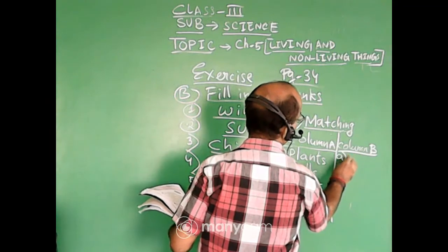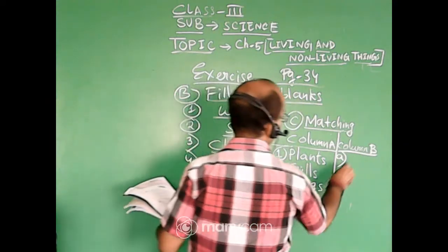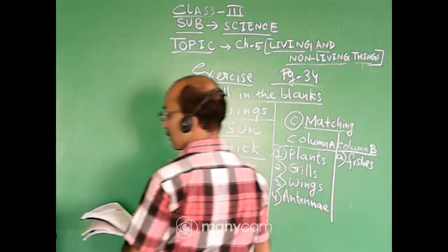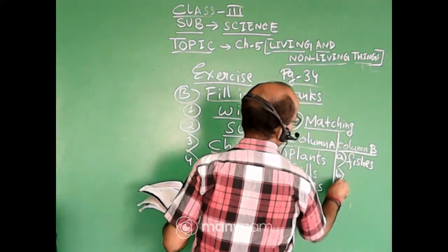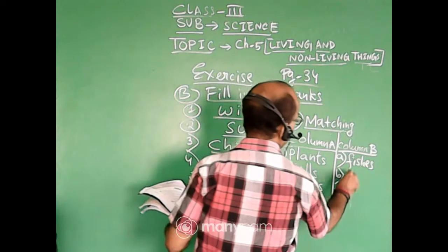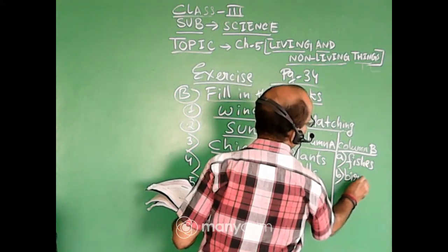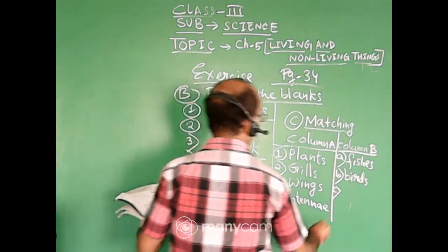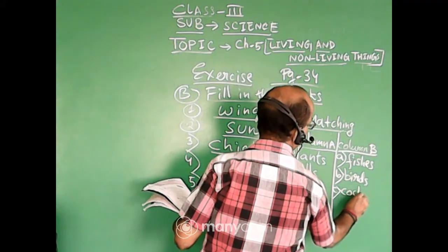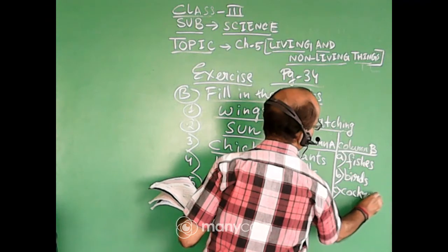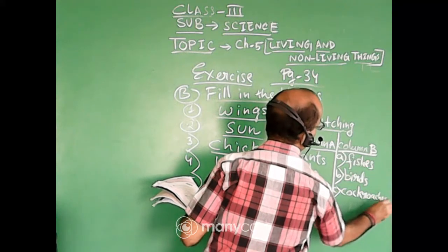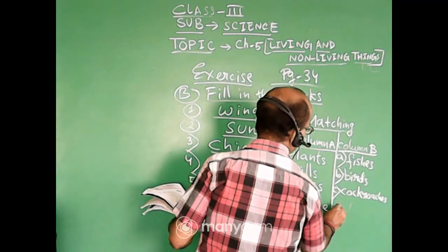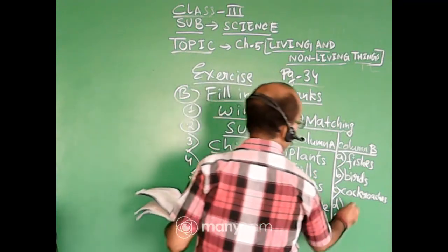Here. Number A. Fishes. Number B. Birds. Number C. Cockroaches. Number C. Cockroaches. And number D. It is seeds.